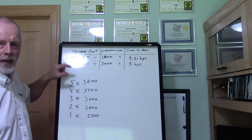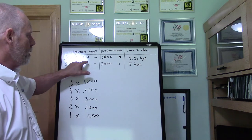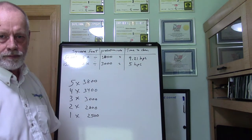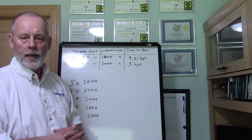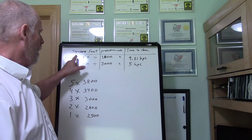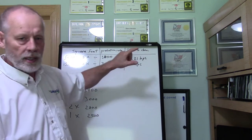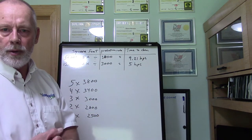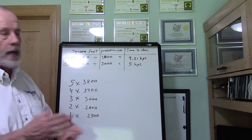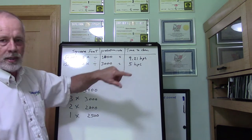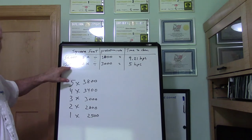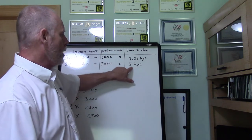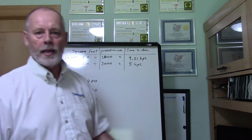For example, if you have a facility that's 35,000 square feet, cleaning five days per week, and your production rate is 3,800 square feet per hour, that means it's going to take 9.21 hours per clean. Whether you know the time to clean or the production rate, you can always derive the other. For a 15,000 square foot account cleaned three days per week at a production rate of 3,000 square feet per hour, it will take five hours to clean.